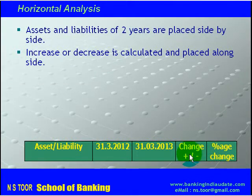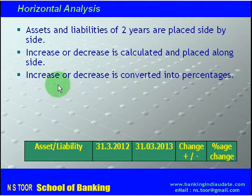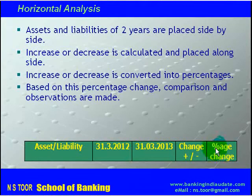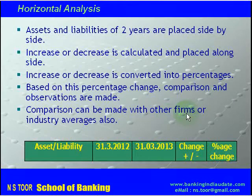This increase or decrease is then converted into percentage. Based on this percentage change, comparison is made and observations are also made. That is how we do horizontal analysis. The comparison can also be made with other firms and industry averages.